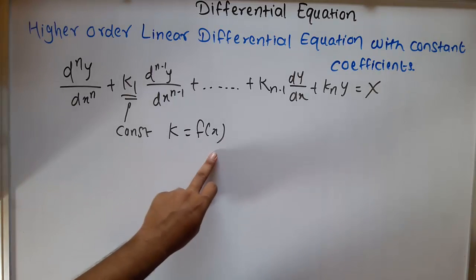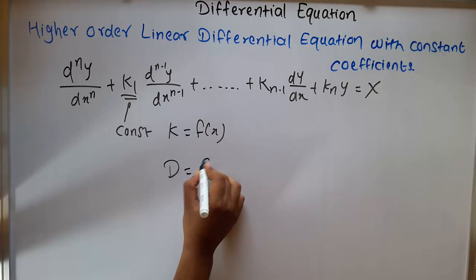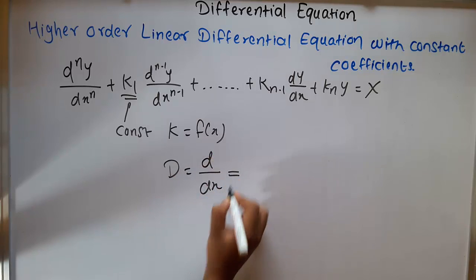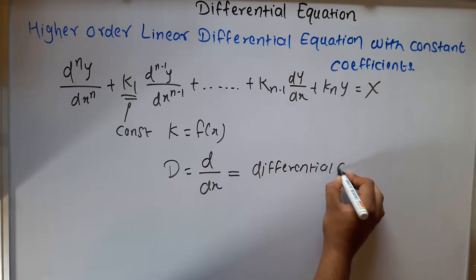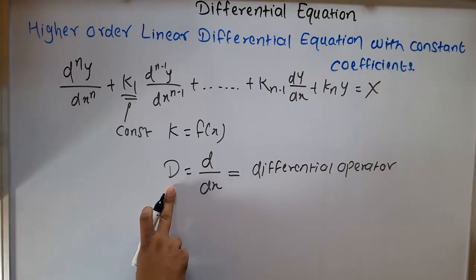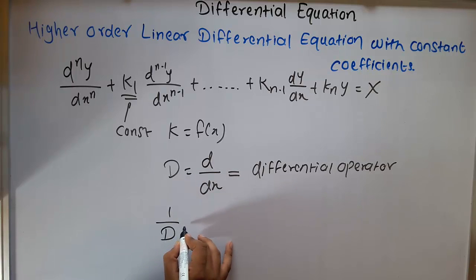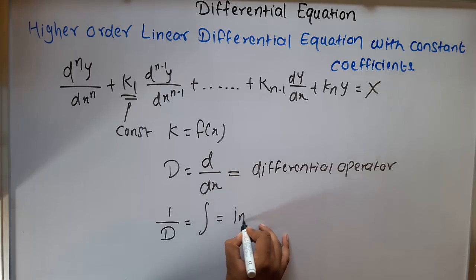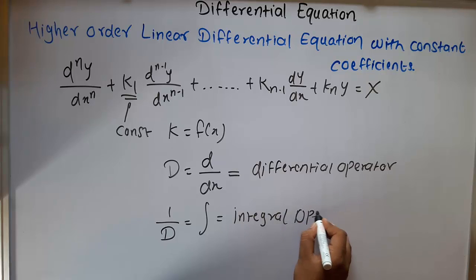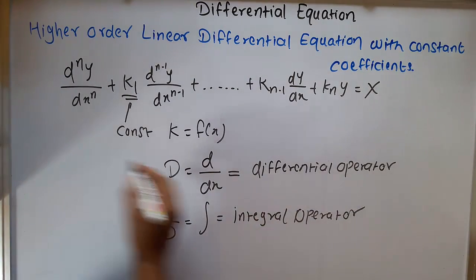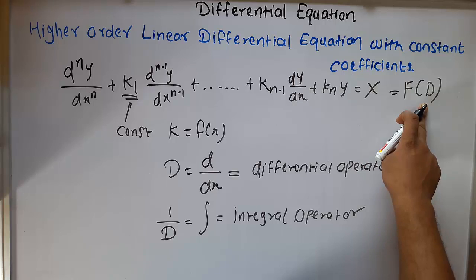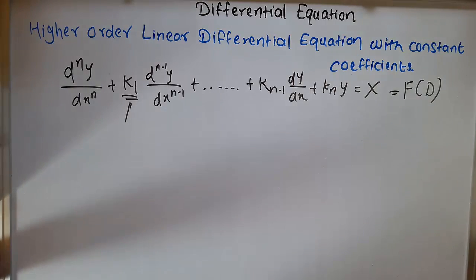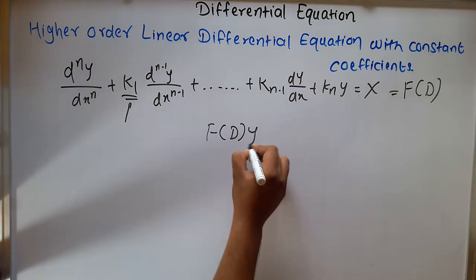We consider D equal to d/dx, so that is called the differential operator. If we use 1/D, that will be the integral operator. So we call this equation as f(D), and if we have integration that will be 1/D. So we write it as f(D)y equal to x.